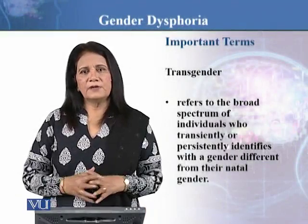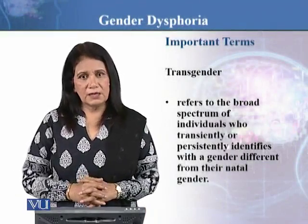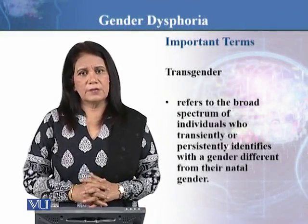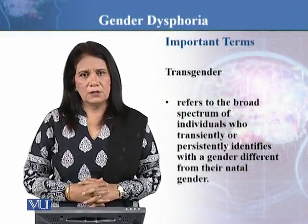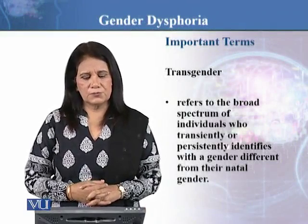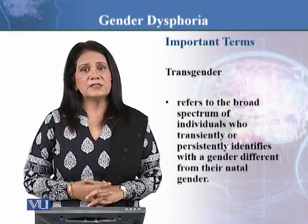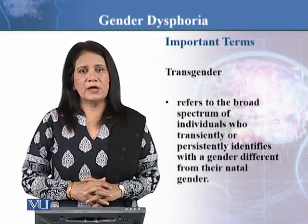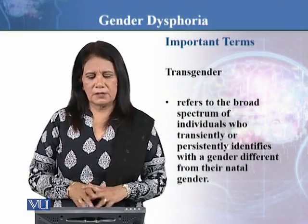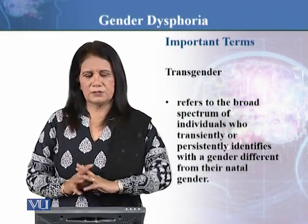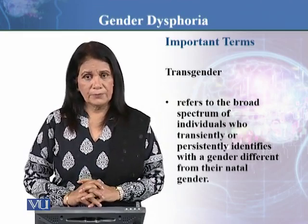After paraphilic disorder, we will look into the second major type of psychosexual disorder, which is gender dysphoria. Previously it used to be known as gender identity disorder, but in DSM-5 it is named as gender dysphoria.